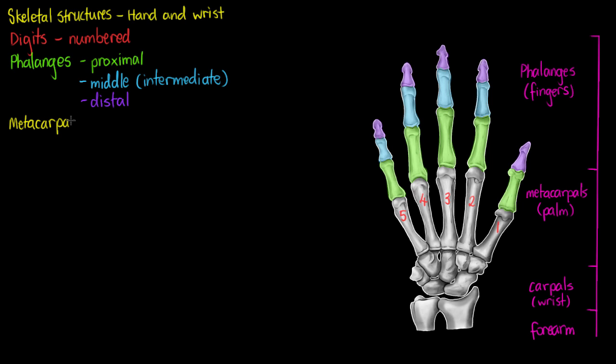The next set of bones are our metacarpals, or the bones of our palm. We've got those numbered, but that number applies to the whole finger, not just that palm region.